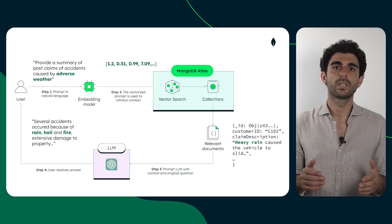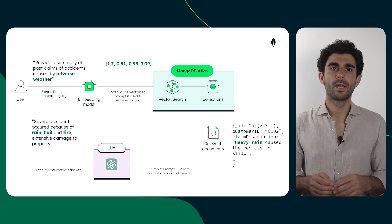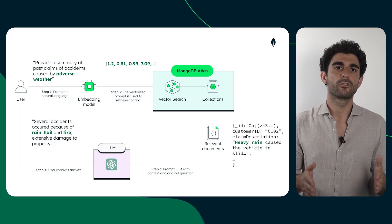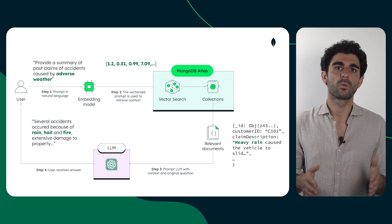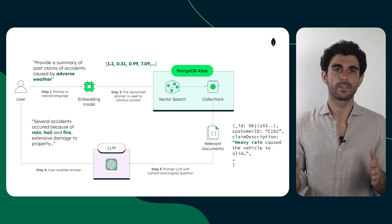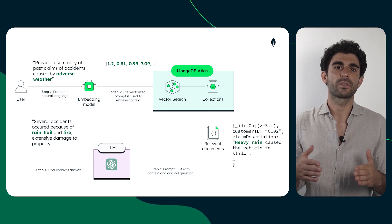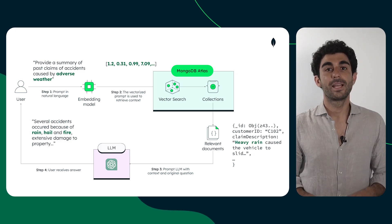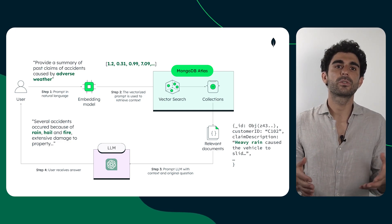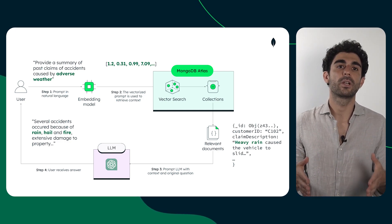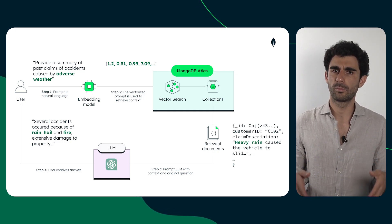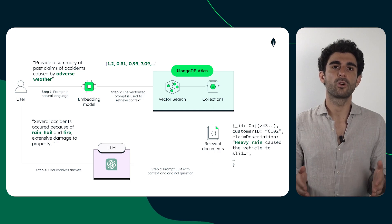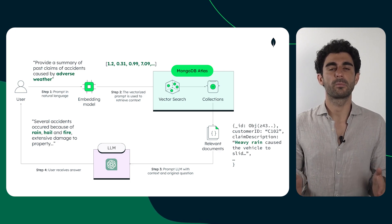Now the relevant documents are fed to the LLM. As evident in the response, the adjuster is provided with a summary regarding weather-related accidents, encompassing mentions of rain, hail, and fire. Essentially, the user is talking in natural language with the data. Pretty cool, huh? In a moment, we'll see how this operates in a business application.